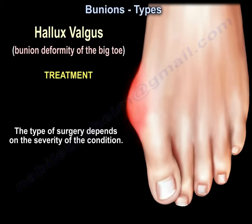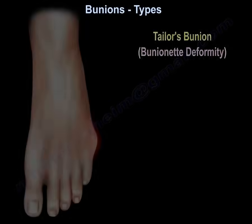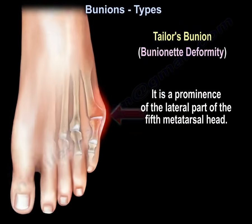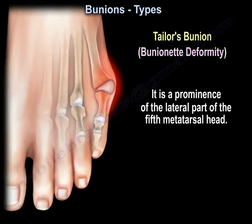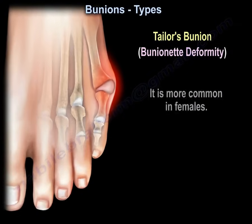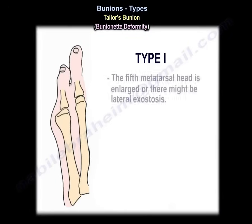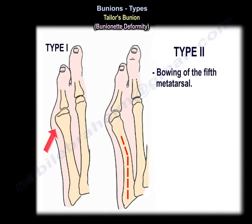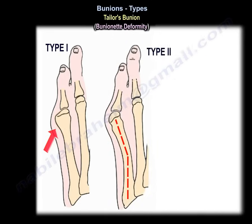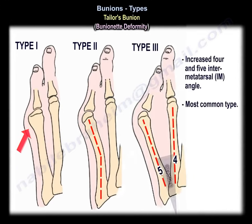The type of surgery depends on the severity of the condition. Taylor's bunion, or bunionette deformity, is a prominence of the lateral aspect of the fifth metatarsal head. It's more common in females, usually bilateral, and has three types. Type one involves an enlarged fifth metatarsal head or lateral exostosis. Type two is bowing of the fifth metatarsal. Type three is an increased four-to-five intermetatarsal angle, which is the most common type.